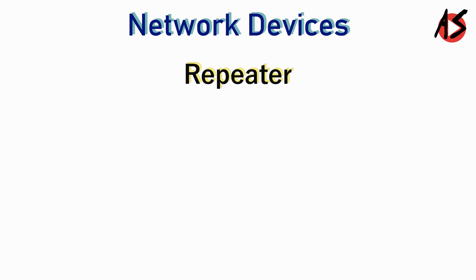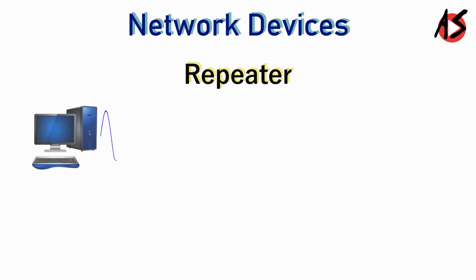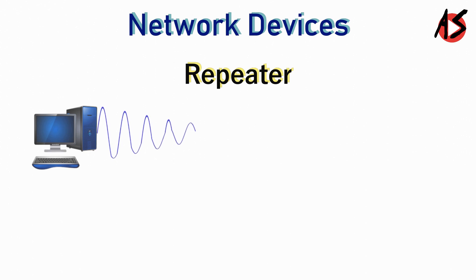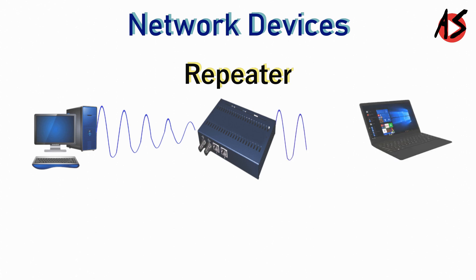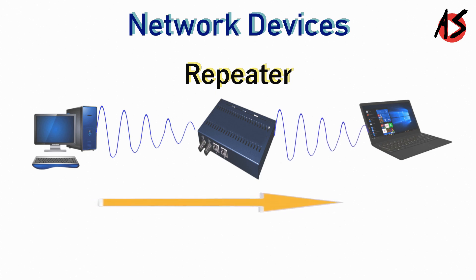Repeater. Network signal in a cable gets weaker with the distance it travels. A repeater is a device that receives a signal, regenerates it and then retransmits it on the network so that the signal can cover longer distances.